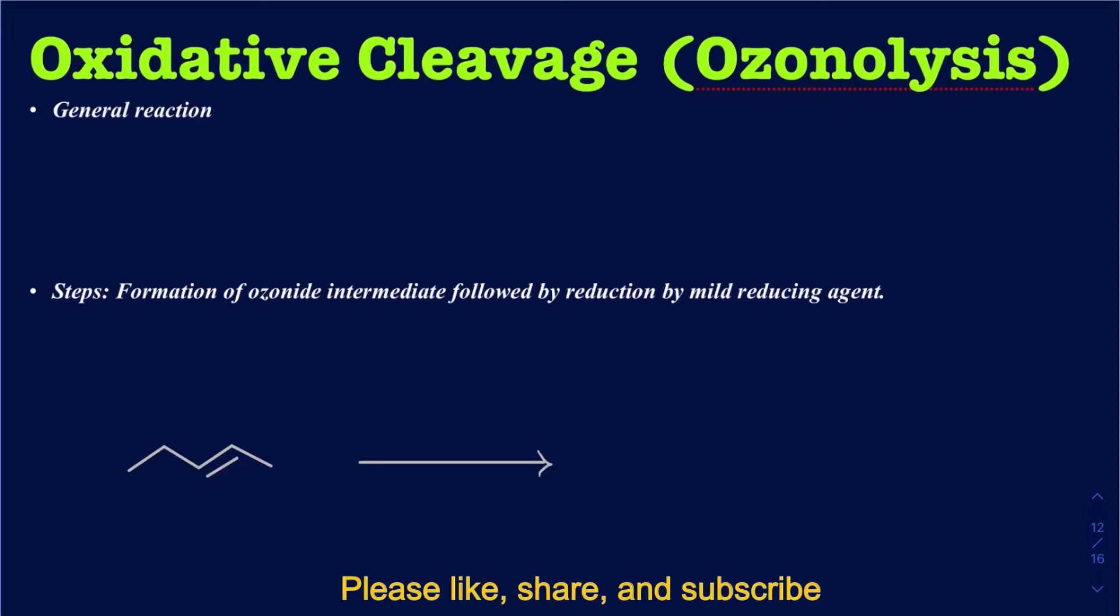Hello everyone, in this lecture we're going to be talking about the ozonolysis of alkenes, where alkenes can be broken into aldehydes and ketones in the presence of ozone and a mild reducing agent.